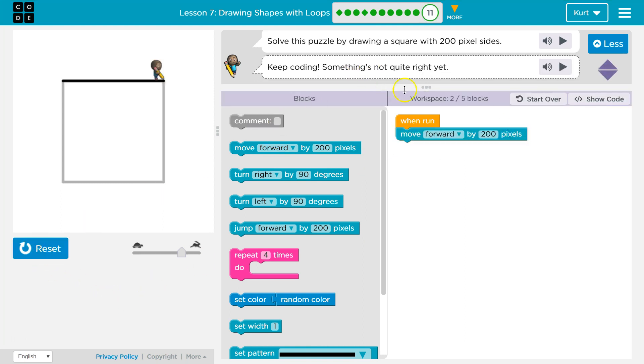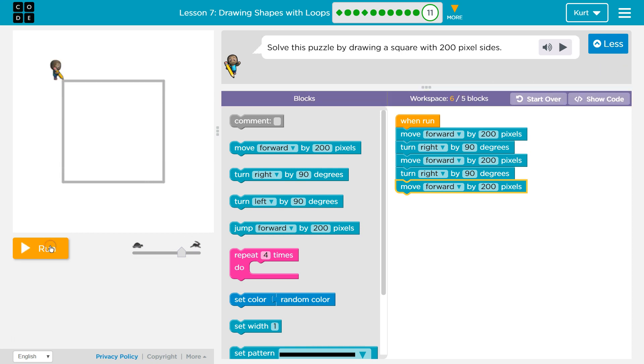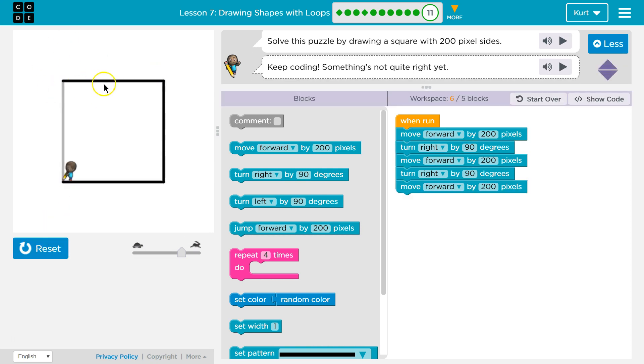Okay, keep coding, something's not quite right. So I'm going to want to turn right by 90 degrees. And then I'm going to want to move forward again. And then I'm going to want to turn right again. Then I'm going to want to move forward again. Let's see what's going on here. So now we're going around and we're almost at completing the block.